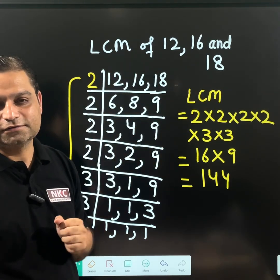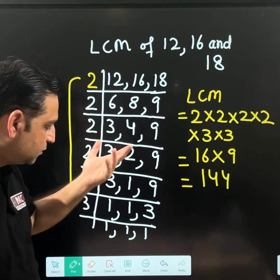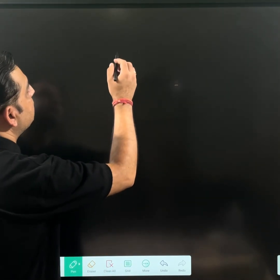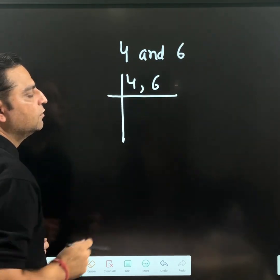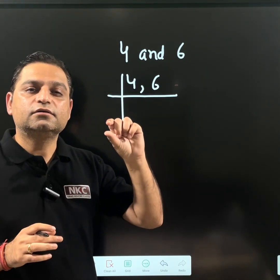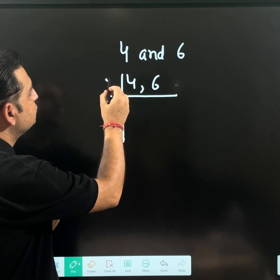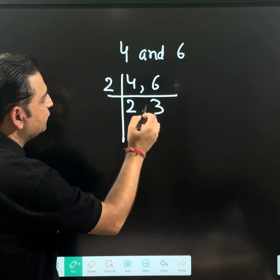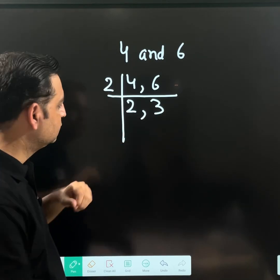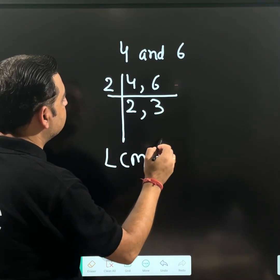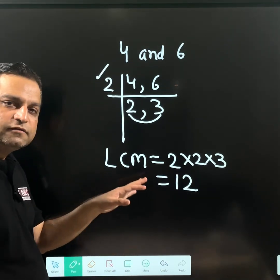This is the best way — dividing by primes. But sometimes another method is also there. For example, to find LCM of 4 and 6, write just 4 and 6. The second way is to take any common number which divides both 4 and 6 — forget about primes. 4 and 6 are both divisible by 2: 2 twos are 4, 2 threes are 6. Now 2 and 3 are not divisible by any common number other than 1, so stop here. It is a shortcut — multiply this 2 and the last two values, and you will still get 12.